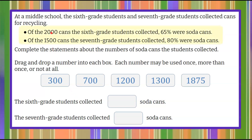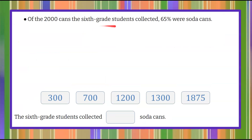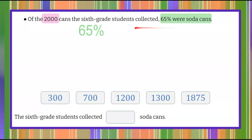Welcome back. So again, we're focused on these two bulleted items. We're going to focus on the first one: 2,000 cans the 6th grade students collected, and 65% of them were soda cans. So let's rewrite that — we have 2,000 cans, 65% of them were soda cans. 65% of 2,000 were soda cans, so we want to find 65% of 2,000 to know the number of soda cans.